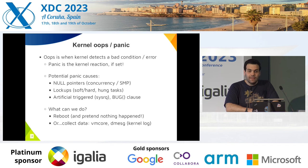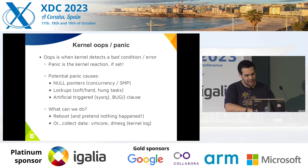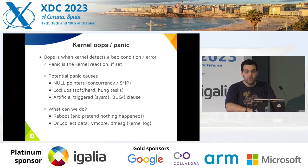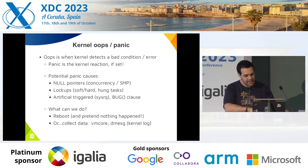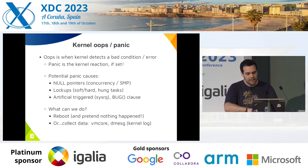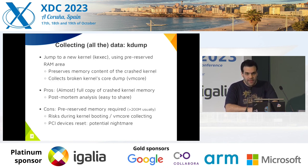What can we do when we face a panic? We could do nothing — that's usual, just forget about it. But it's interesting, if possible, to collect data — to take this opportunity and collect something like a vmcore, which is a memory image of the broken kernel, or the message. So we have two ways of collecting such data.